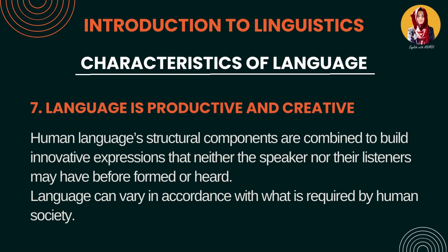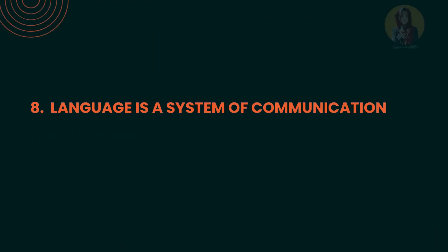Number 7: Language is productive and creative. Human language jo hai woh productive aur creative hai. Hamare paas limited number of words aur sentences hote hain lekin hum log unko different ways se combine karte hain. Ek cheez ko bolne ke liye hum log different words use kar sakte hain, aur language ko hum log change kar sakte hain according to time, according to the need. That's why we call language productive and creative.